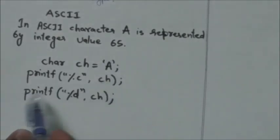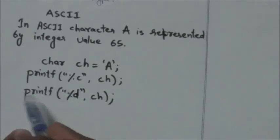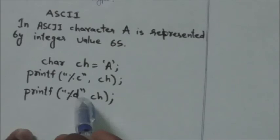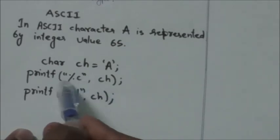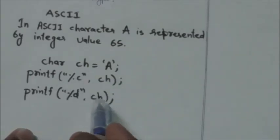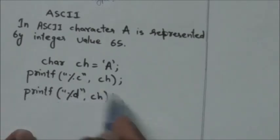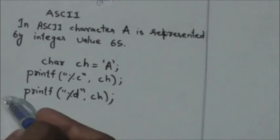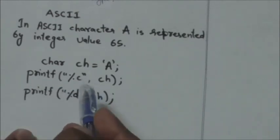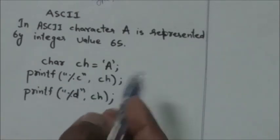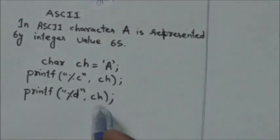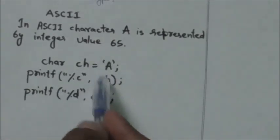Now see this next statement. In this printf function we have used %d as a placeholder instead of %c, and the variable ch still represents the character capital A. So the output of this statement will print the integer value instead of the character capital A, because %d prints the integer value of the character.